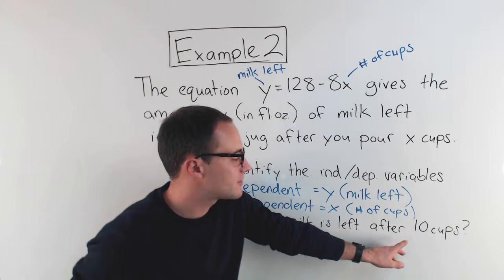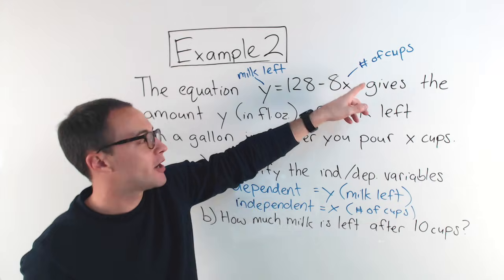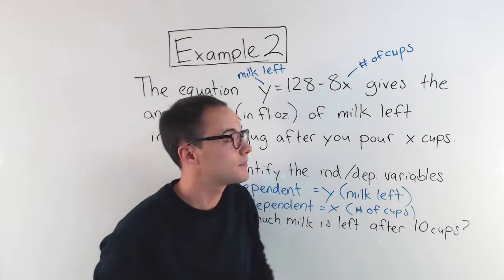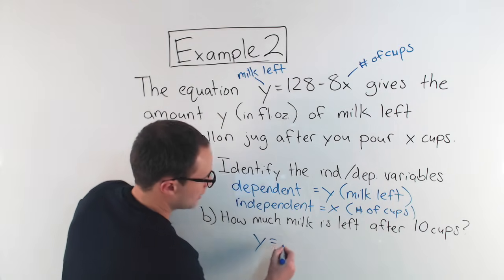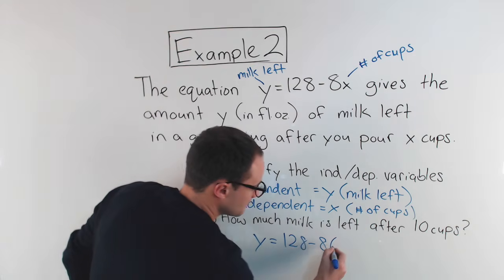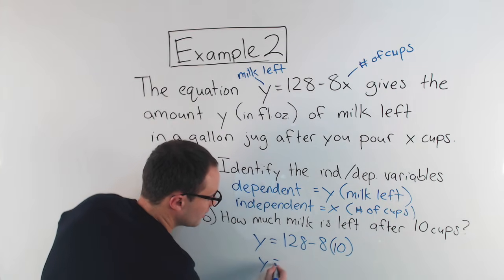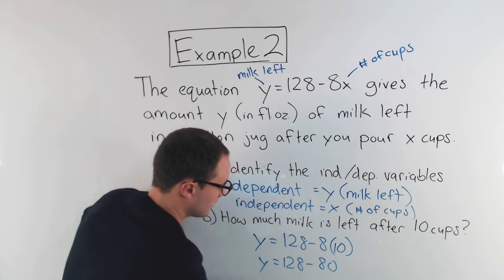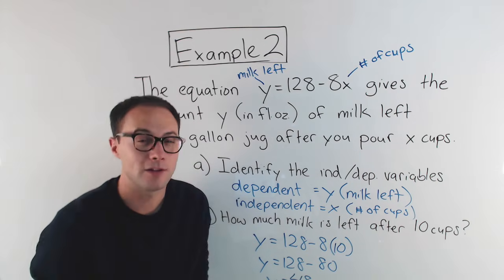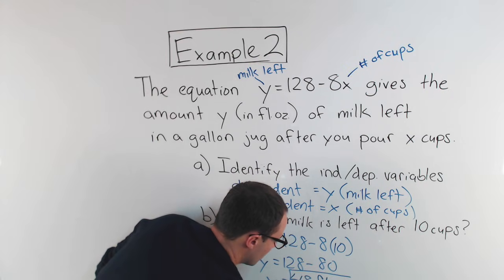Now part B, how much milk is left after 10 cups? Well, 10 cups, that's represented by x in my variable. So if x is equal to 10, all I need to do to find out how much milk is left is substitute. So I'm going to have y is equal to 128 minus 8 times 10 cups. Well, order of operations, I'm going to do my multiplication first. y equals 128 minus 8 times 10 is 80. Now I've got my subtraction, y equals 48 units. Remember, y was in fluid ounces, so 48 fluid ounces of milk left.